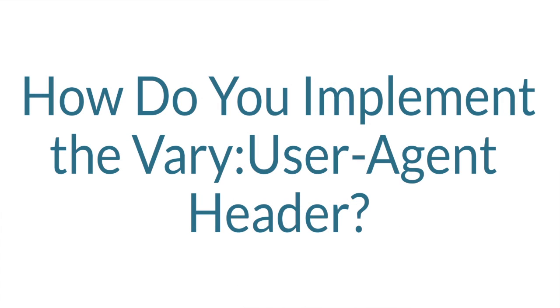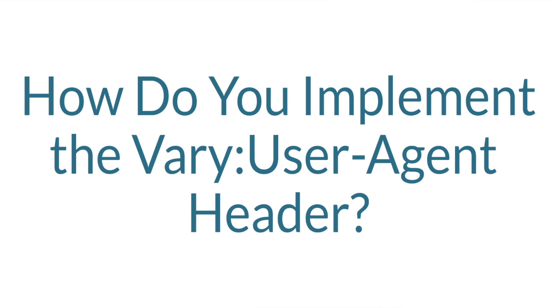Now, how do you implement the vary user agent header? The basic steps are, first, determine what platform your site runs on. How you implement the header differs if you run on WordPress, on an Apache server, or your site is built on PHP or some other platform.